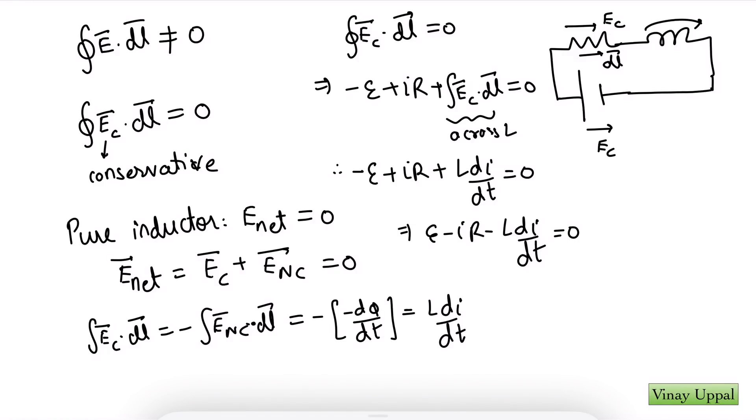We are not writing integral E dot dl zero. That's not what we are writing. We are writing E_conservative dot dl zero. So what happens is there is a conservative electric field generated inside the inductor and whose potential difference is actually Ldi by dt. So there is a potential corresponding to the conservative field inside the inductor. And when we write a voltage drop of Ldi by dt across the inductor, we are not writing integral E dot dl. We are writing integral E_conservative dot dl. We are writing the potential drop, the potential corresponding to the conservative field inside the inductor.